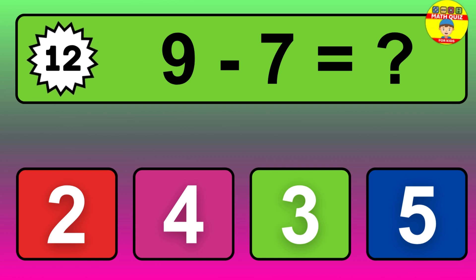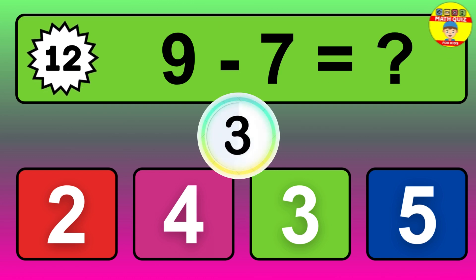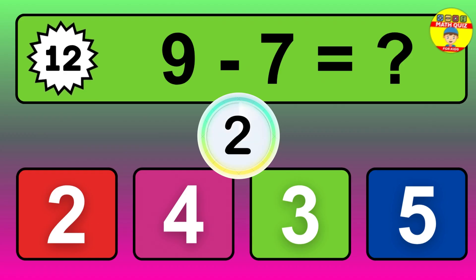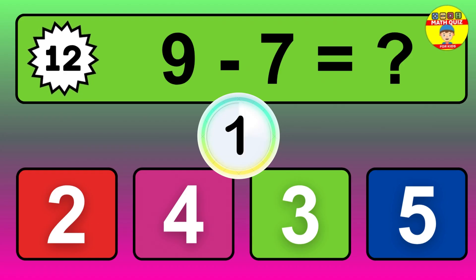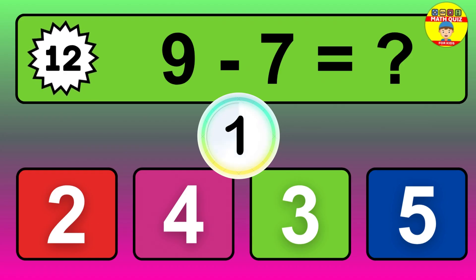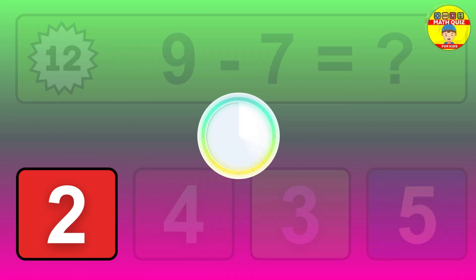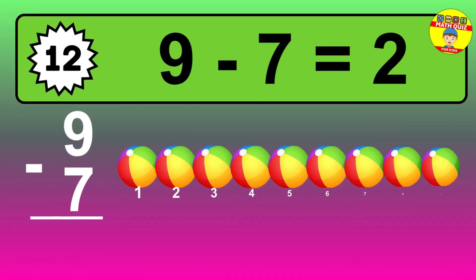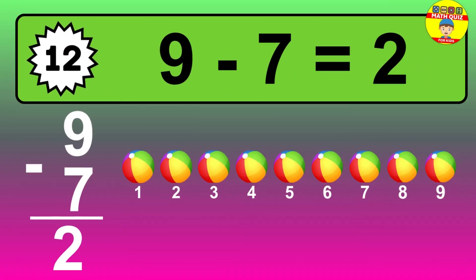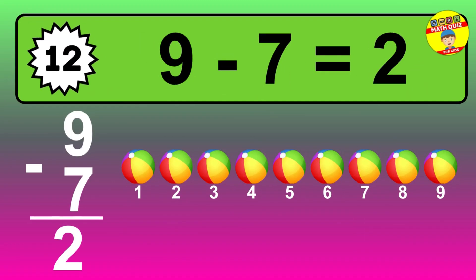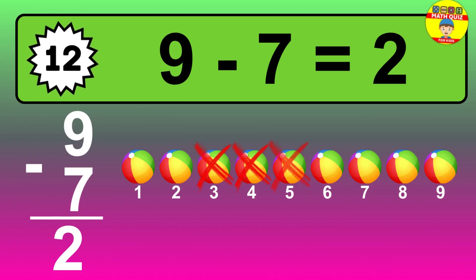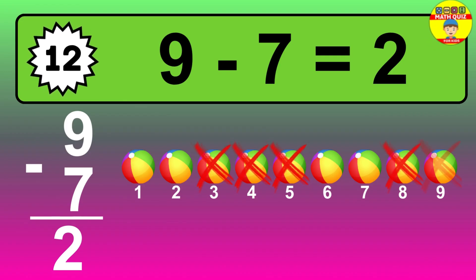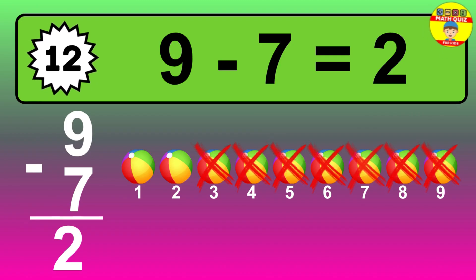Question 12. 9 minus 7 equals what? The answer is 9 minus 7 is 2. Let's count it: 1, 2.